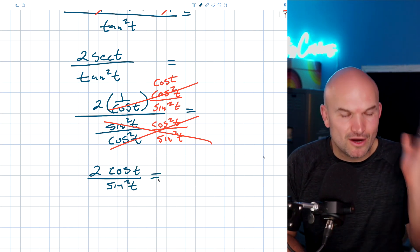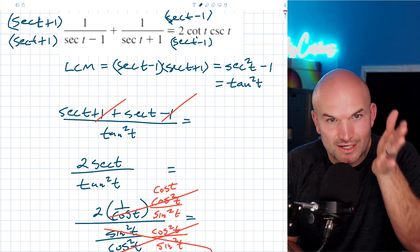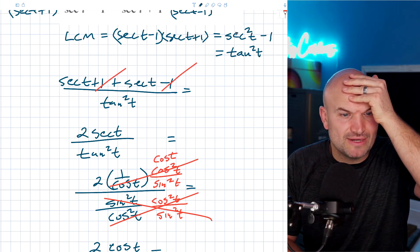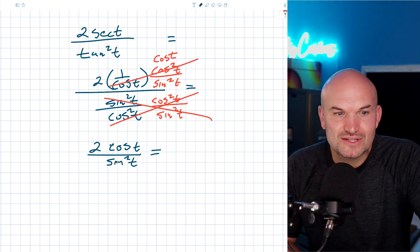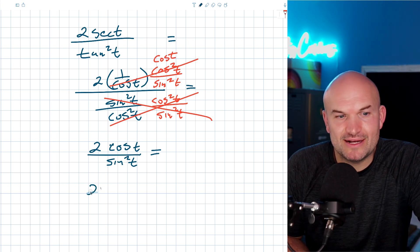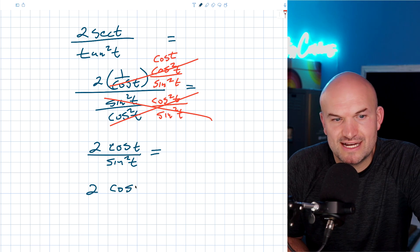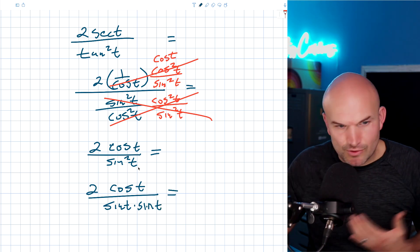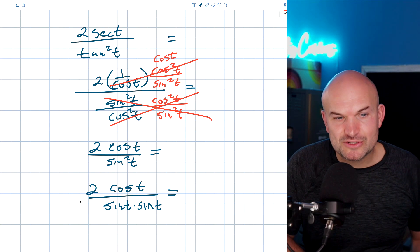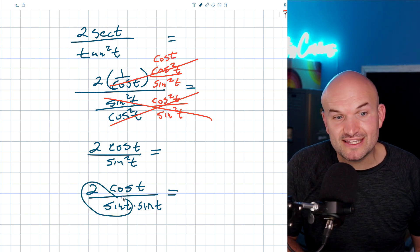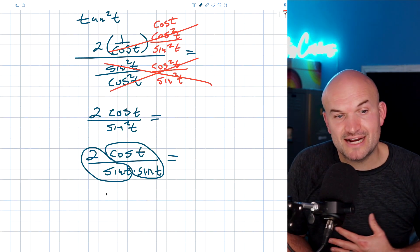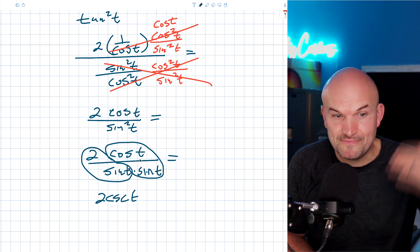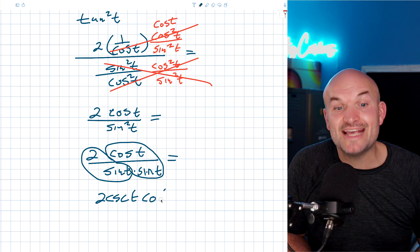Now you might be thinking how is this going to give me two times cotangent and cosecant? I can rewrite this as two cosine of t divided by sine of t times sine of t, because sine squared of t means sine of t times sine of t. Since everything is separated by multiplication, I can group these: two over sine of t, which is two cosecant of t, and cosine of t over sine of t, which is cotangent of t.